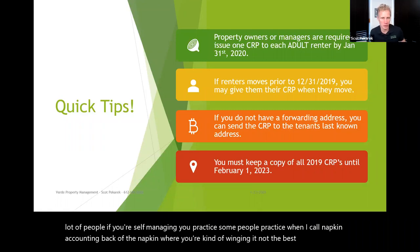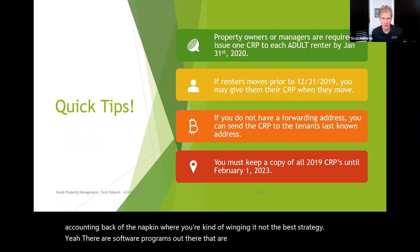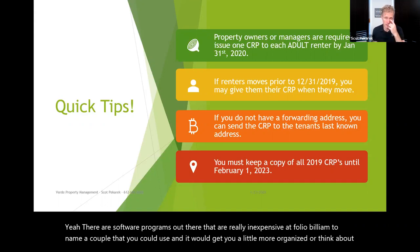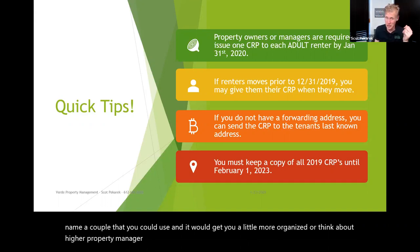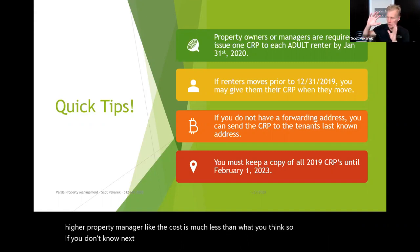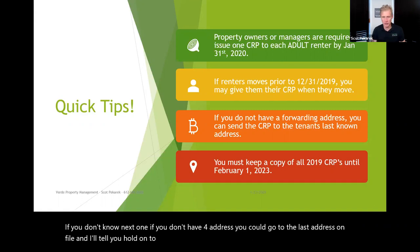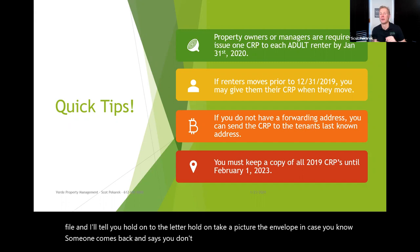There are software programs out there that are really inexpensive — AppFolio, Buildium, to name a couple — that you could use and get you more organized. Or think about hiring a property manager; the cost is much less than you think. If you don't have a forwarding address, you can go to the last address on file — hold onto the letter, take a picture of the envelope in case someone says you didn't try to send it. You want to have proof.